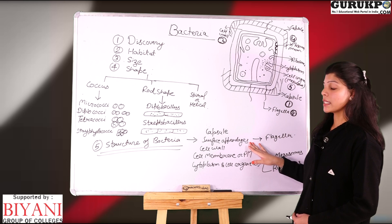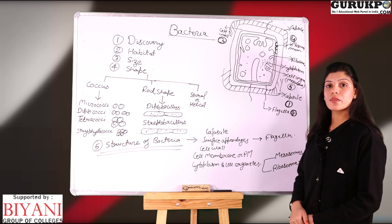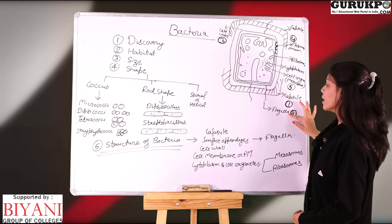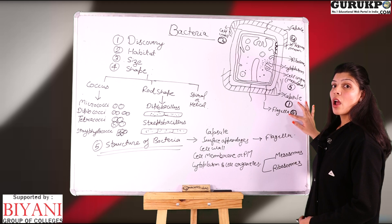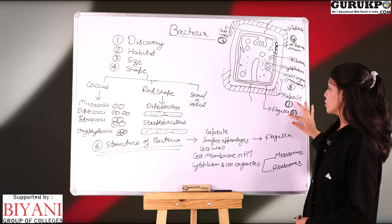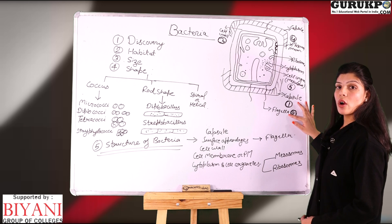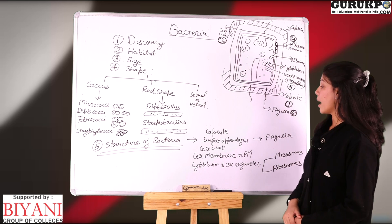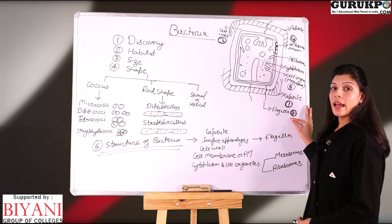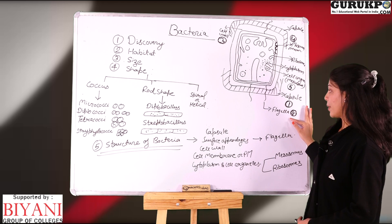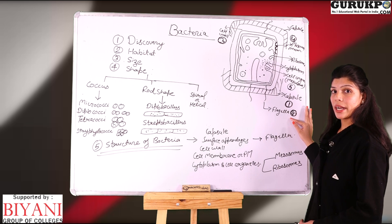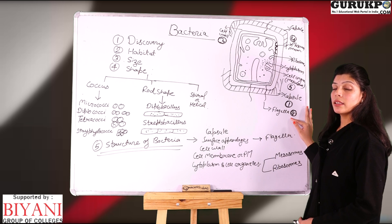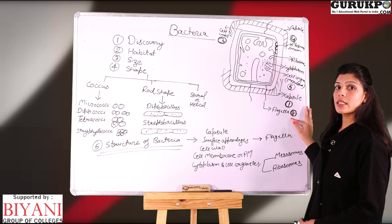Second is the surface appendages. There are two main categories. First is the flagella. Flagella are made up of flagellin protein. The basic components of flagella are basal granule, hook, and filament. The main function of flagella is that they help in the movement of bacteria. When flagella are present, bacteria are called trichous; if flagella are absent, they are called atrichous.